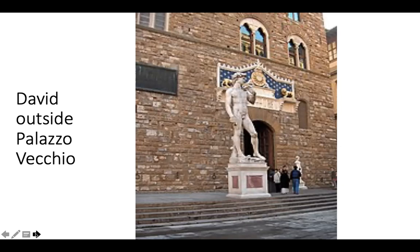David symbolizes courage — he's a small and apparently defenseless but very confident force, aimed and looking toward Rome, which was regarded as a much larger and more powerful threat to Florence, which was actually also true. The Malcolm Gladwell reference offers a revisionist version of the David and Goliath story — it would be more accurate to consider David as a thoughtful, strategic warrior, capable of defeating a much larger and seemingly more powerful foe.